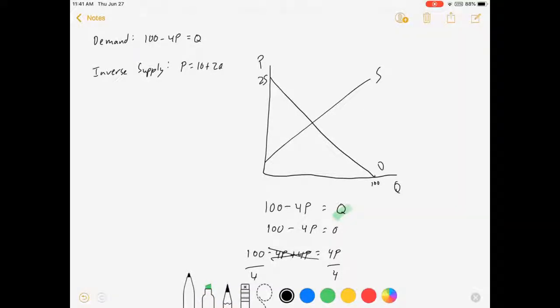There it is. So, that is how you could graph a demand curve. Just solve for the intercepts, and you'll be fine.